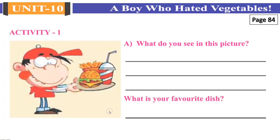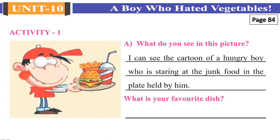Let's begin with Activity 1 which is on page number 84. Question A is: what do you see in this picture? Well, we can see a cartoon of a boy who is holding a plate — a dish — in which there are nice tasty eatables kept. I can see the cartoon of a hungry boy who is staring at the junk food in the plate held by him.